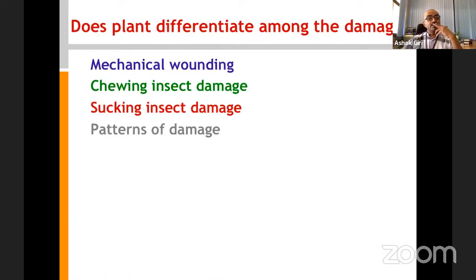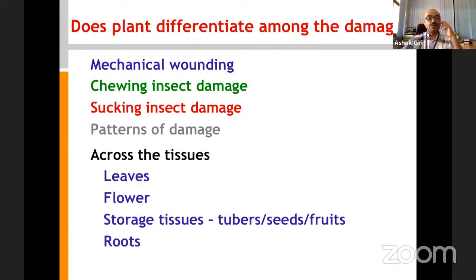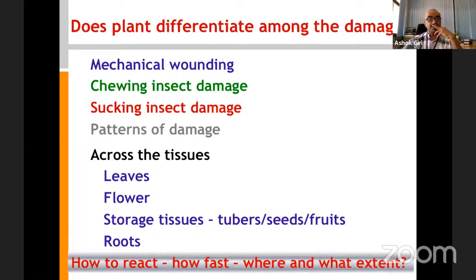When studying plant-insect interactions, there are different kinds of insects in nature: chewing insects that eat whatever plant they feed on, and sucking pests. Based on that, there are different patterns of damage. On the plant side, insects may feed across various tissues — leaves, flowers, soft tissues, tubers, seeds, or even roots. The response of the plant or insect — how fast it is and to what extent — are important questions. I'll introduce a little bit of plant signaling now.